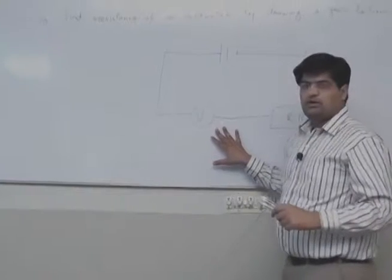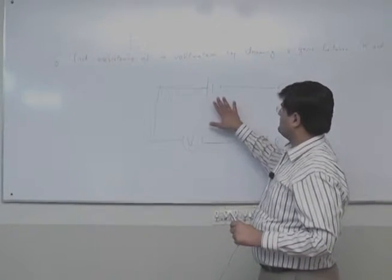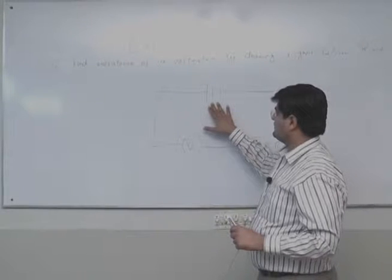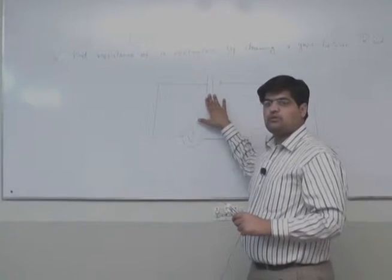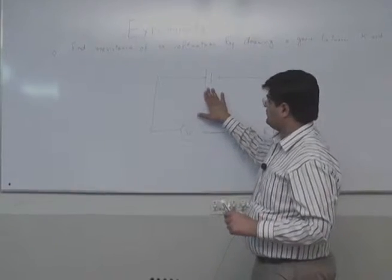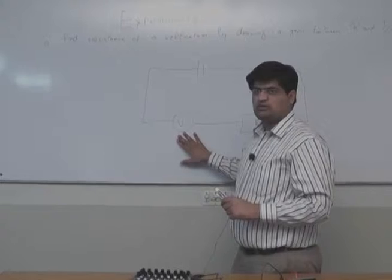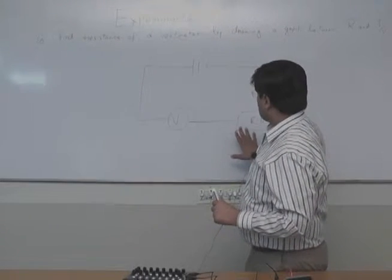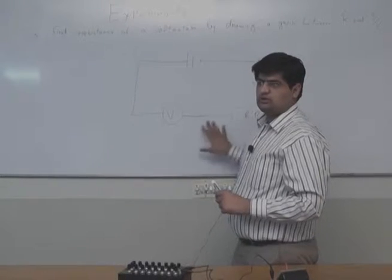This is the circuit diagram for today's experiment and in circuit diagram we can see the apparatus as well. We will take the battery which will range from 0 to 6 volt and we will connect a voltmeter in a resistance combination with the help of a resistance box and this is the key to switch on and off the circuit.